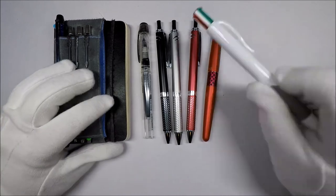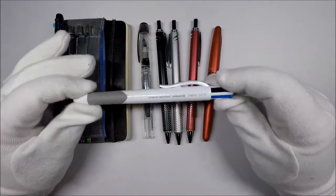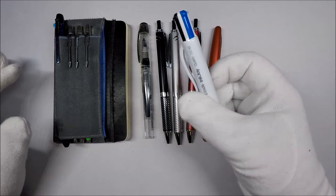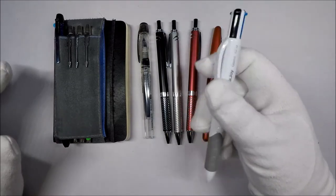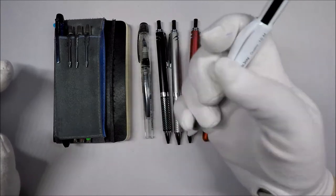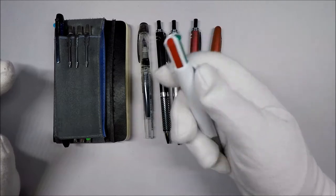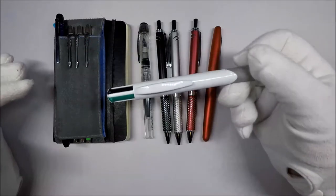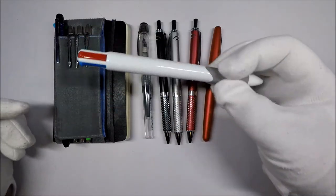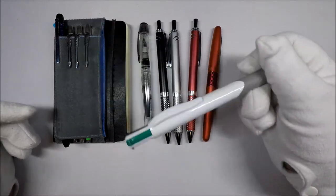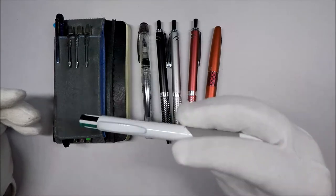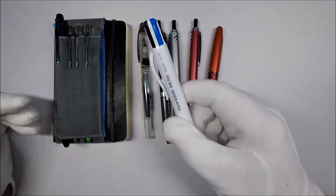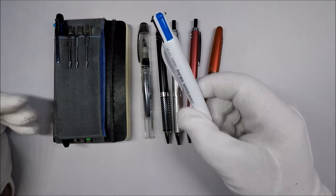The first one I want to talk about is the Papermate Inkjoy. This is a multi-pen, very similar to one of the old traditional blue and white ones. The Inkjoy is pretty comfortable to write with, and that's really why I have it out here. These also are very inexpensive. You should be able to get them for like a buck or two. At one point I got a box of these for like $12 for 12 of them.